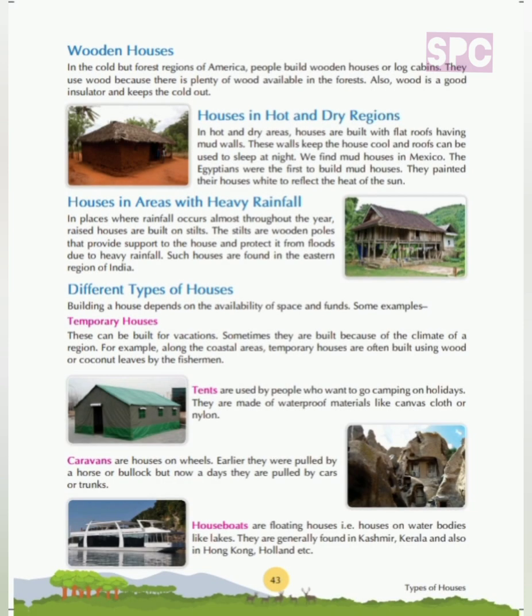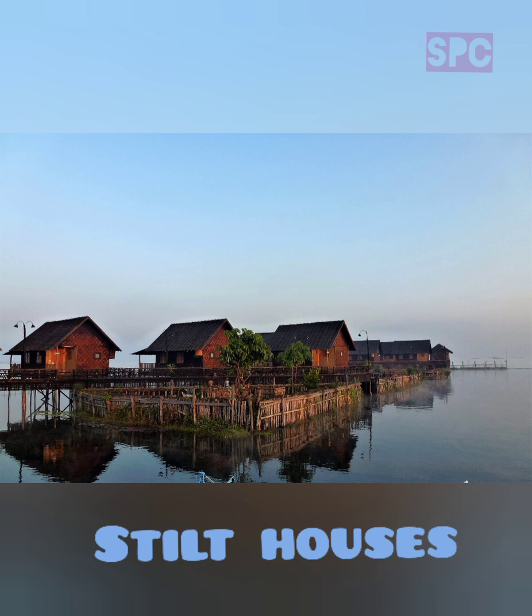In places where rainfall occurs almost throughout the year, raised houses are built on stilts. The stilts are wooden poles that provide support to the house and protect it from floods due to heavy rainfall. Such houses are found in the eastern region of India. Stilt houses are raised on stilts over the surface of soil or a body of water, and are made primarily as a protection against flooding.